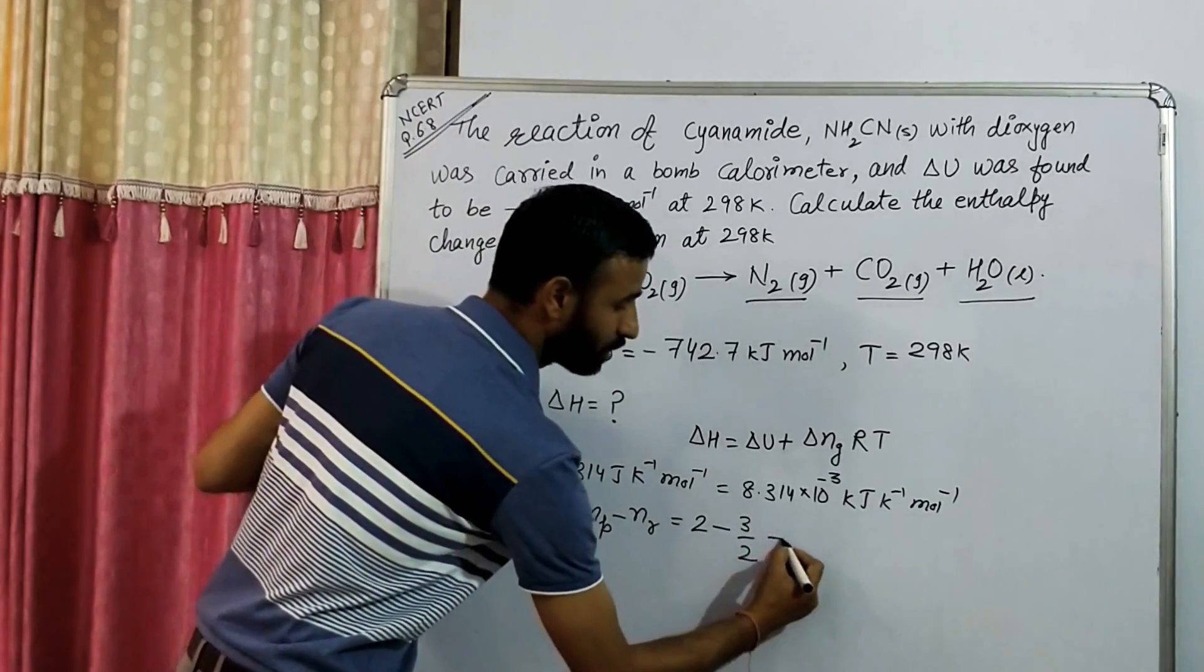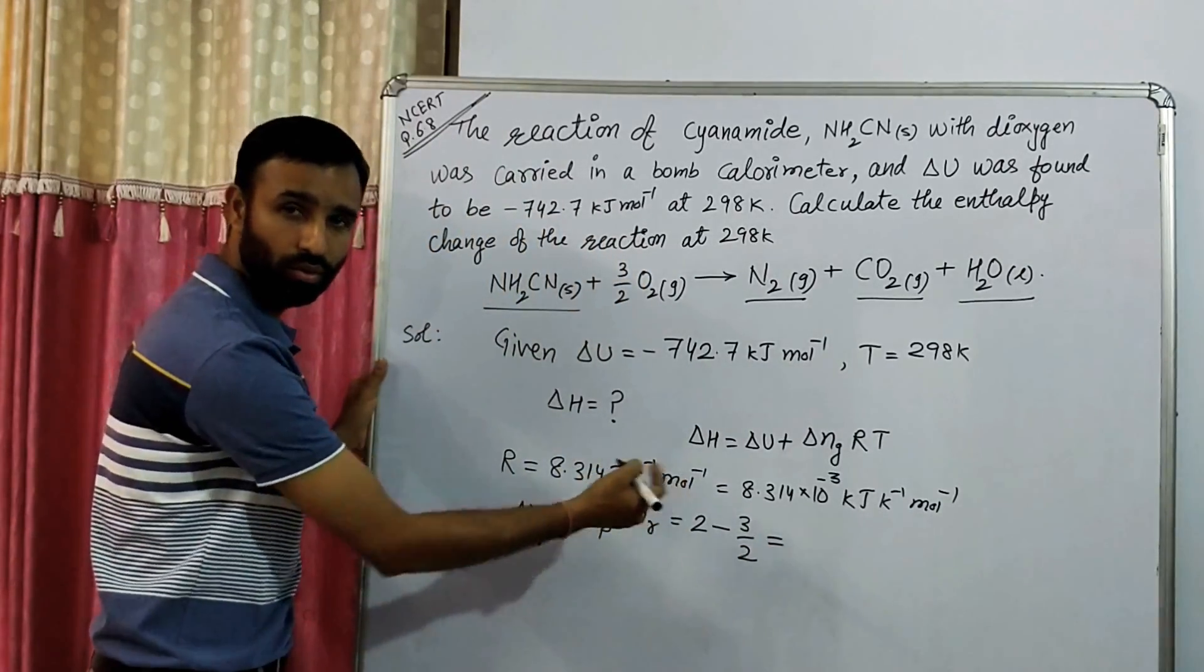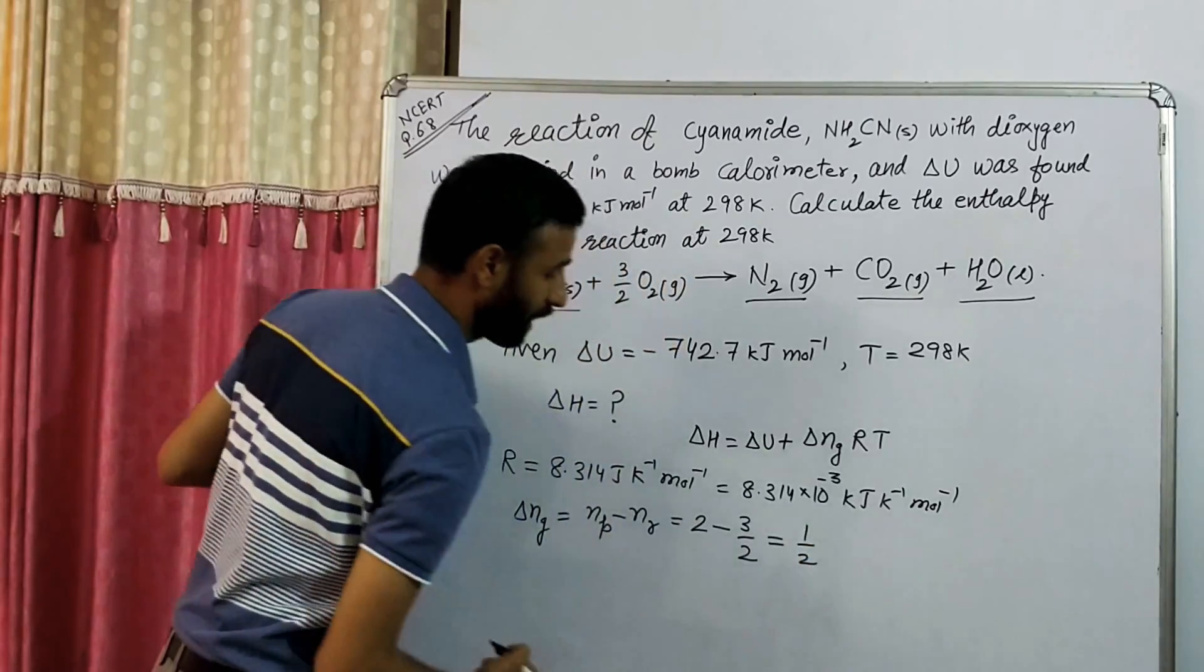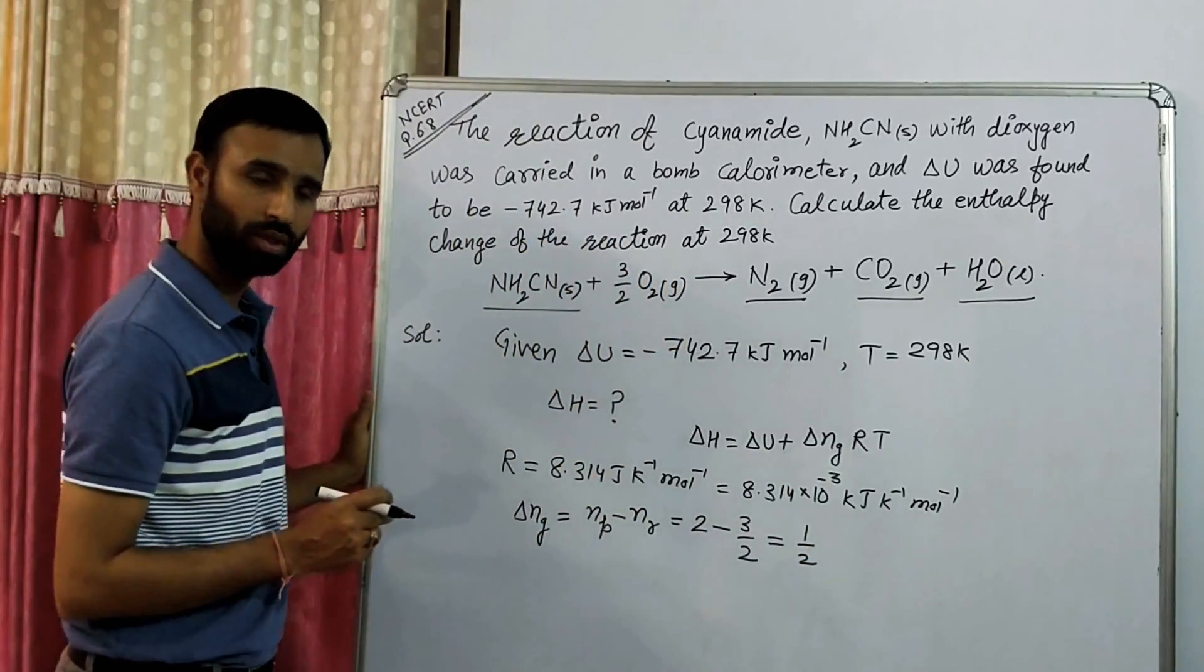So how many moles? Delta Ng is equal to four minus three, which means one by two. So delta Ng is one by two. So all the values now we have. Just put the value here.